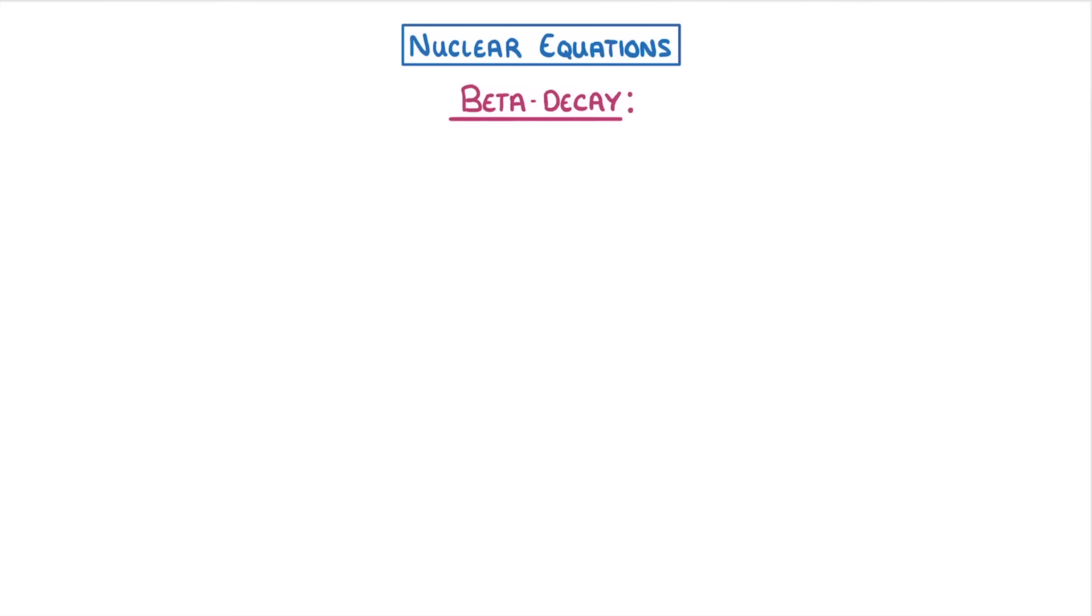Now beta decay is a bit more complicated, because it involves a neutron turning into a proton and emitting a fast-moving electron, which is the beta particle.